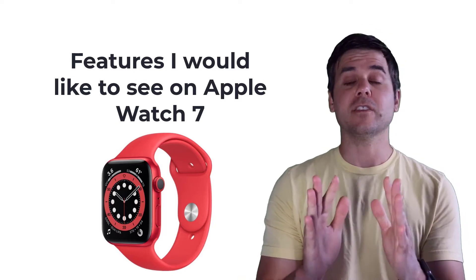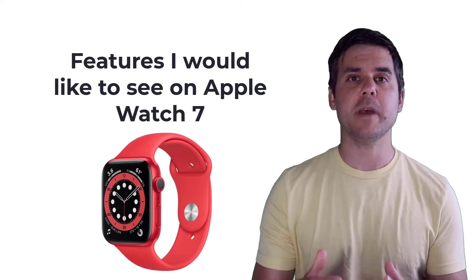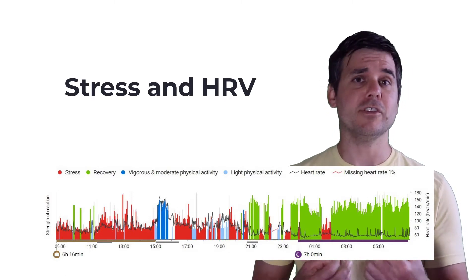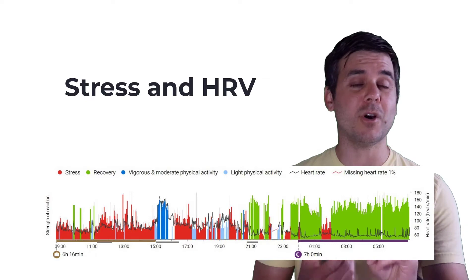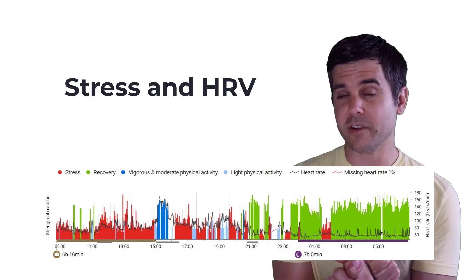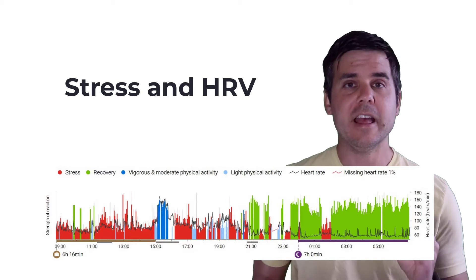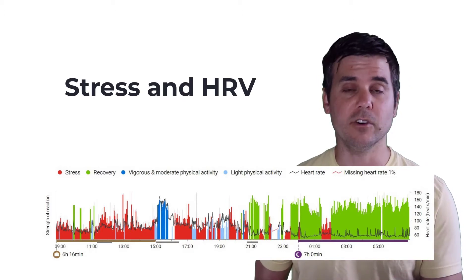So first thing, something that I really, really hope the Apple Watch has is something to measure your stress. The Apple Watch already measures your heart rate variability whenever you use the Breathe app. What I would like to have happen, first of all, I'd like to see that HRV heart rate variability measured 24-7 along with your heart rate, and I'd like to see it being used to measure your stress level.